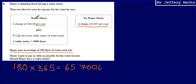So let's work out the cost of how much he would have to pay for having a water meter. We're told it's a charge of £28.20 per year, plus 91.22p for every cubic meter of water used. And we're also helpfully told that one cubic meter is equal to 1000 liters.